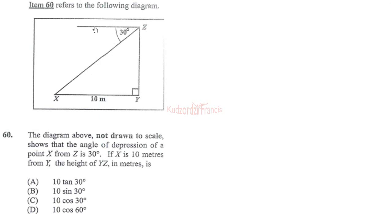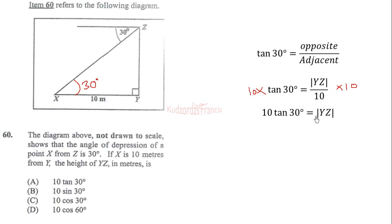Because this is parallel to this, by alternate interior angles, this angle is also 30 degrees. We know an angle and we want to find the opposite, knowing the adjacent. So we can use the tangent ratio: tan 30 will equal opposite YZ over adjacent XY. We substitute to get this. Now when we multiply both sides by 10 to get rid of this, we will obtain 10 tan 30 degrees, which is option A. That's our final question for this paper.